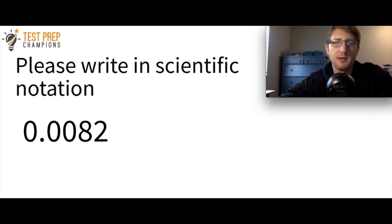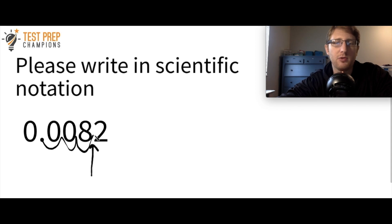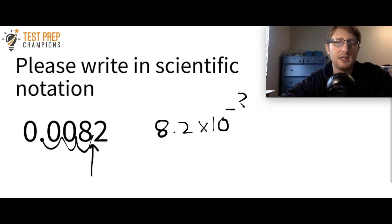Now we're going to look at a different type of example: 0.0082. To do a question like this, we start with the decimal here and move it so it ends up between the 8 and the 2 — that's three different moves. So if I rewrite this, I have 8.2 times 10. But this time it's not 10 to the three — it's going to be 10 to the negative three.